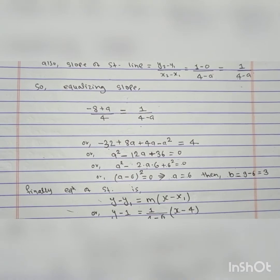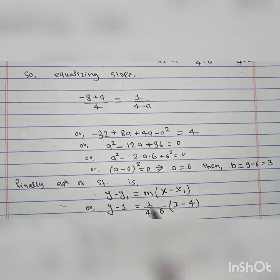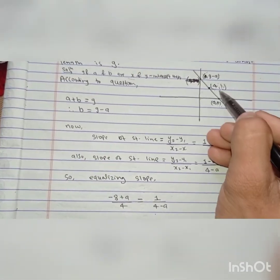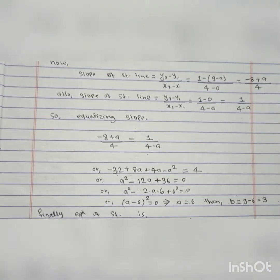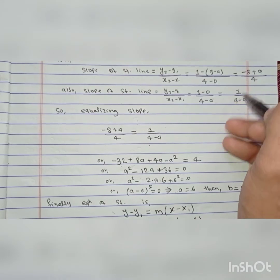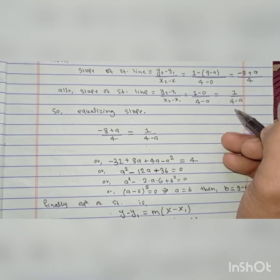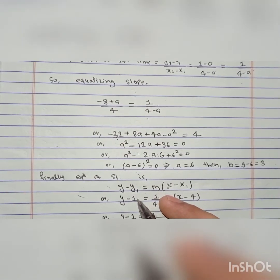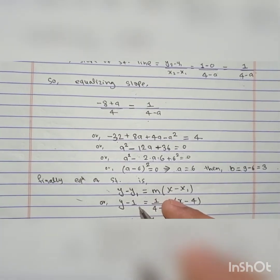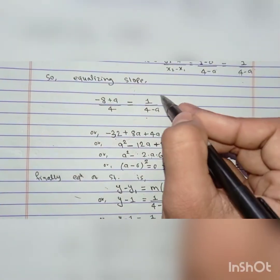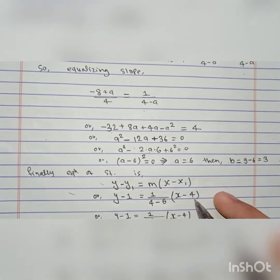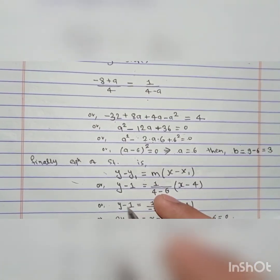Using the point-slope formula y - y₁ = m(x - x₁), we take the point (4, 1) as (x₁, y₁). The slope m can be taken from either calculation; using 1/(4 - a) with a = 6 gives m = 1/(4 - 6) = 1/(-2). So y - 1 = (1/(-2))(x - 4).